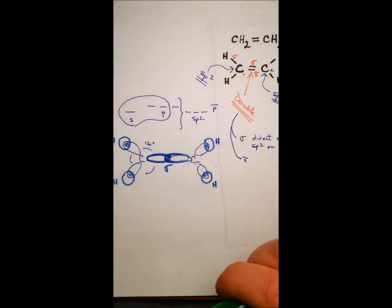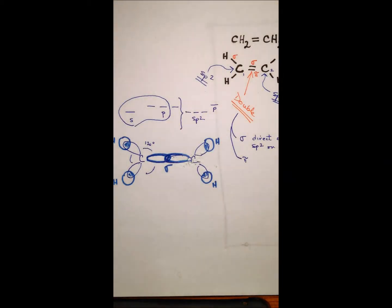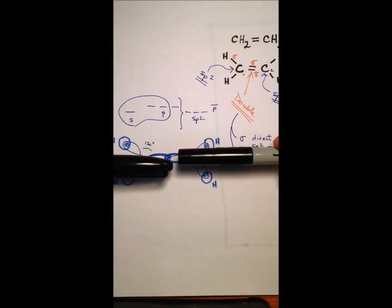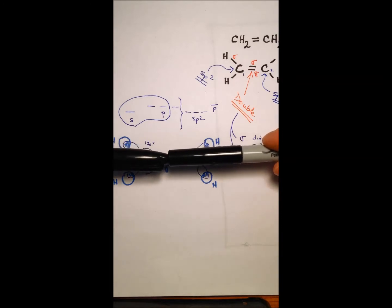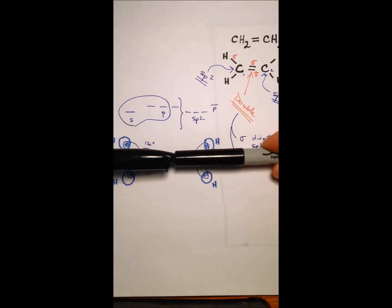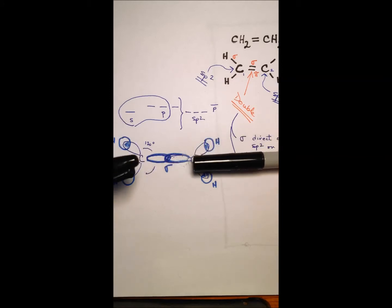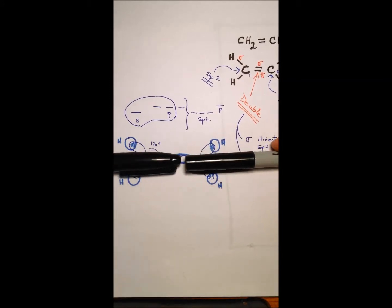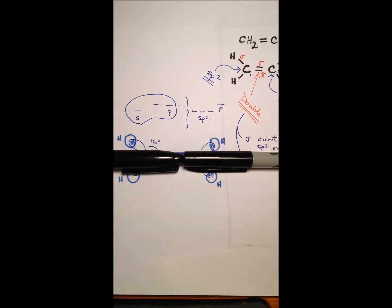So you see why it's called a direct overlap. I'll just use my pens as an example here. Here are my two sp2 hybrid orbitals and these are the direct overlap in this way. So do you see why you can only ever have one sigma bond? Because once you have this direct overlap, this head-on collision, there's no other space here for more orbitals to directly overlap.